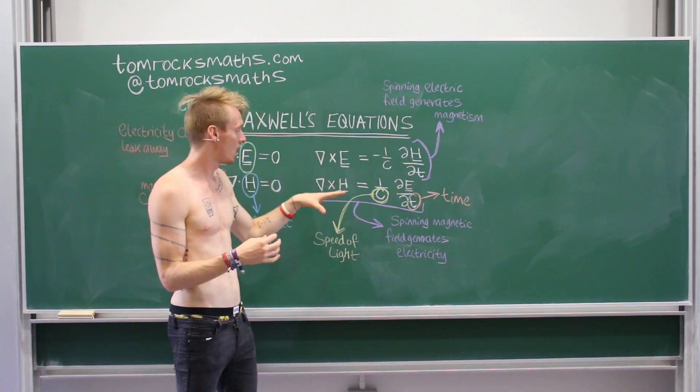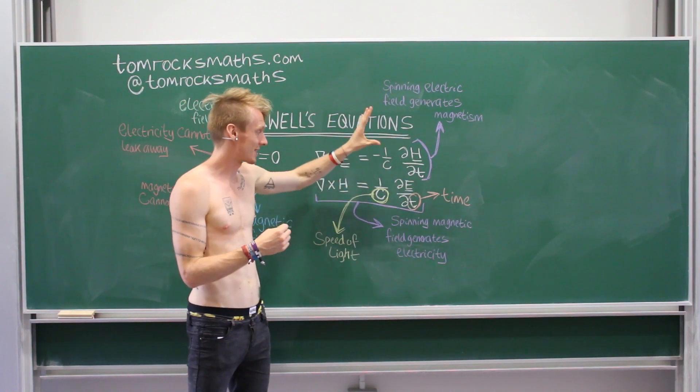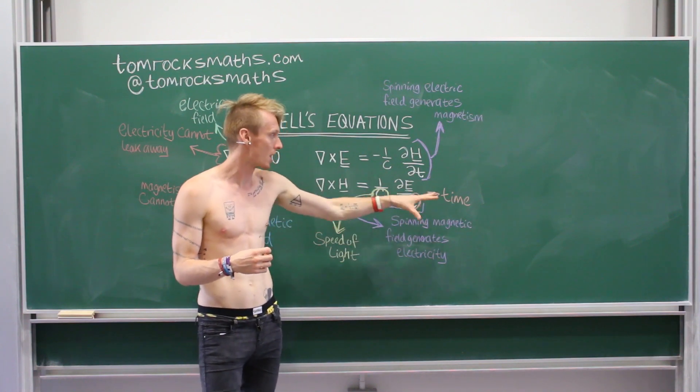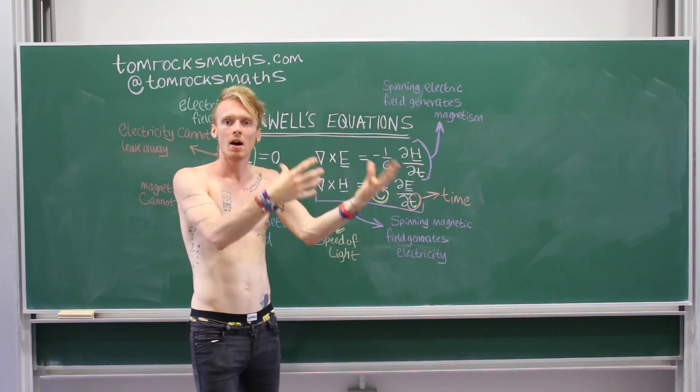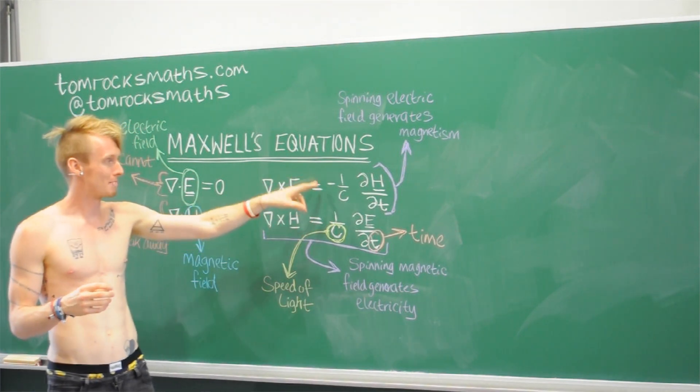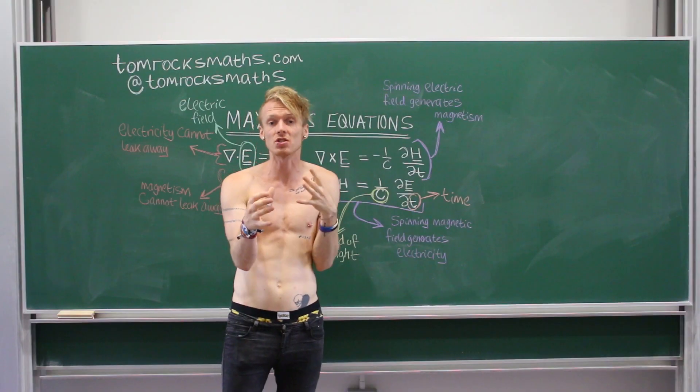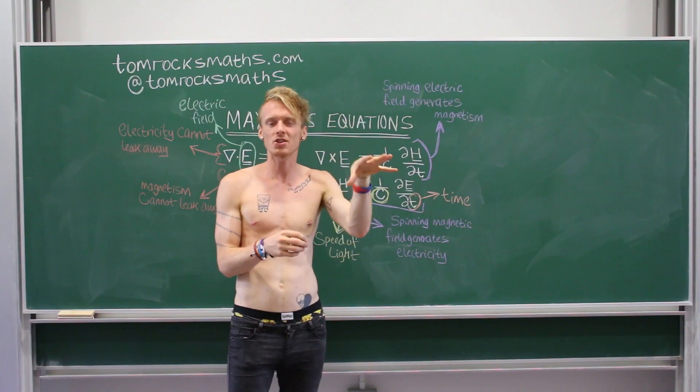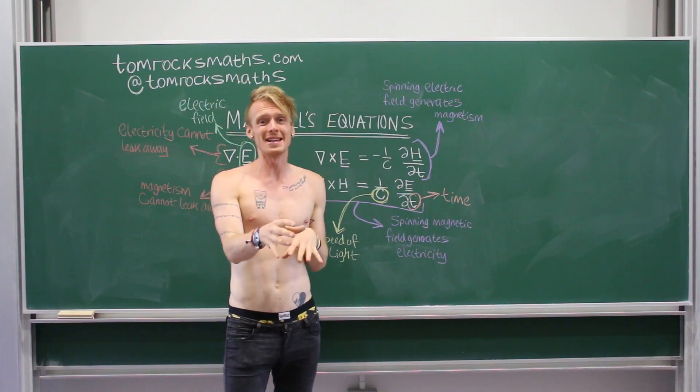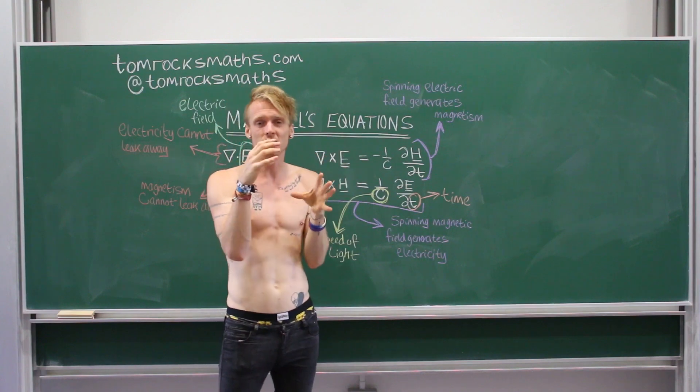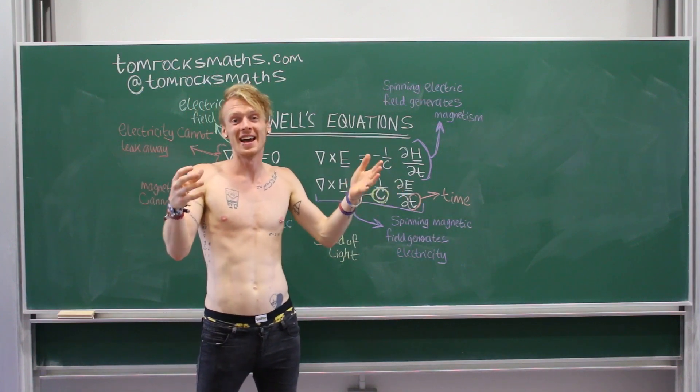The second equation is very, very similar. So, again, we have the curl of the magnetic field this time. And we're saying that is related to the time derivative, T for time, of your electric field. So, again, you have an electric field, you let some time pass, how does it change? And then in both equations, we have this constant. So, it's minus one over C for the top one, and it's one divided by C for the bottom one. And C here is just a constant, it's just a number, and it's the ratio of electrostatic units to electromagnetic units. You don't really need to know what that means, but what you get is that C is around 300,000 kilometres per second. And I've kind of already written it on the board, you may have spotted. That is the speed of light.